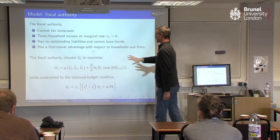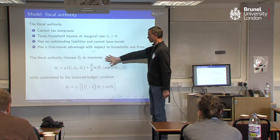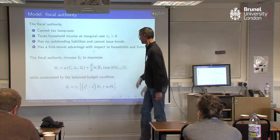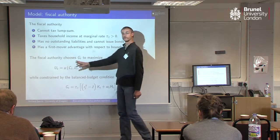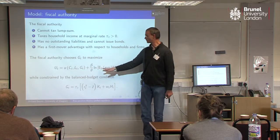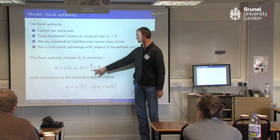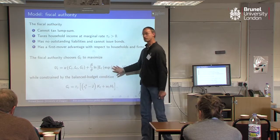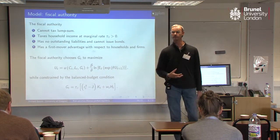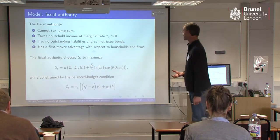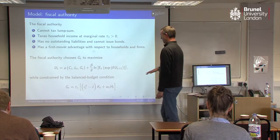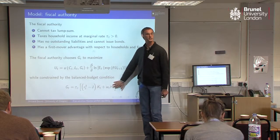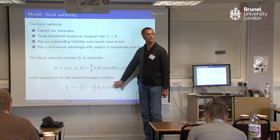The government's problem is to choose this level of government expenditure to maximise the welfare of the representative household. The representative household is a risk-sensitive decision maker, so we've got this theta present in the government's problem — in the fiscal authority's problem — as well. And then the fiscal authority's decision is constrained by this balanced budget condition.